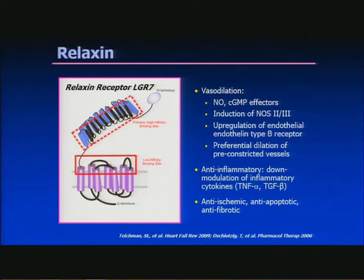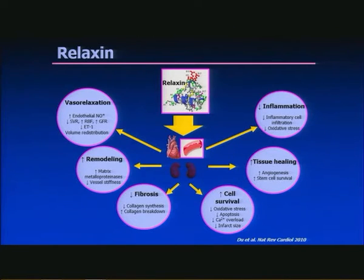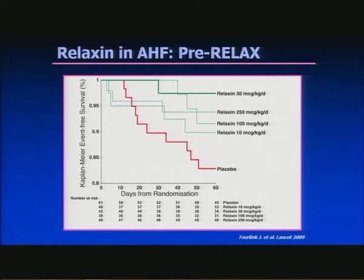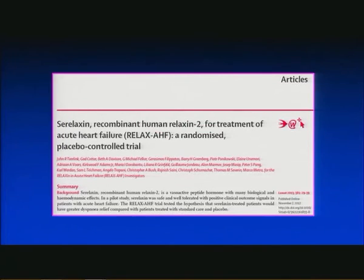The next drug is relaxin, a pregnancy-related hormone with effects including vasorelaxation, increased remodeling, decreased fibrosis, increased cell survival, increased tissue healing, and decreased inflammation. The PRE-RELAX trial in 234 patients showed dyspnea relief and safety was optimal at 30 micrograms per kilogram per day, leading to the RELAX-AHF trial.